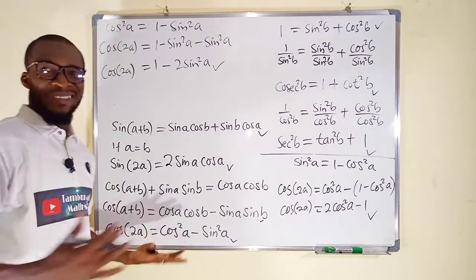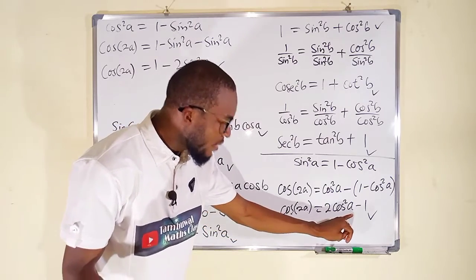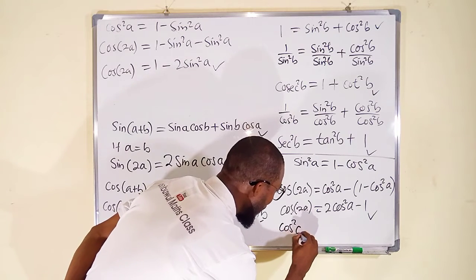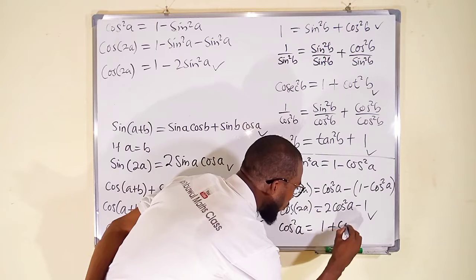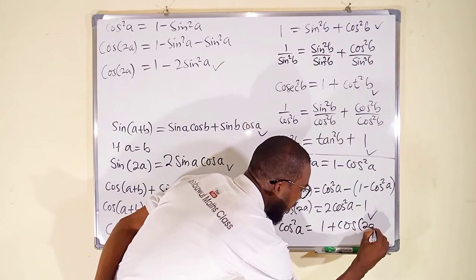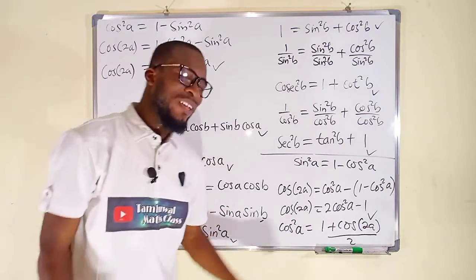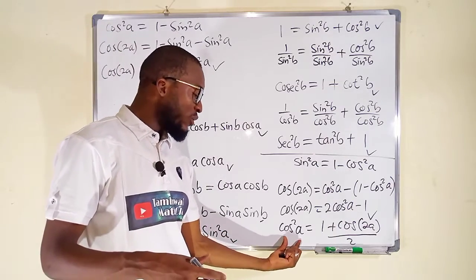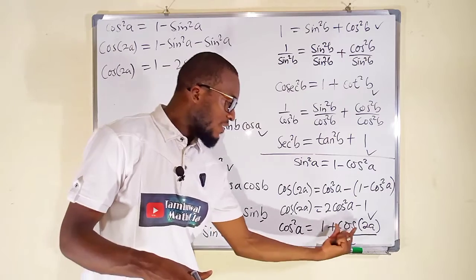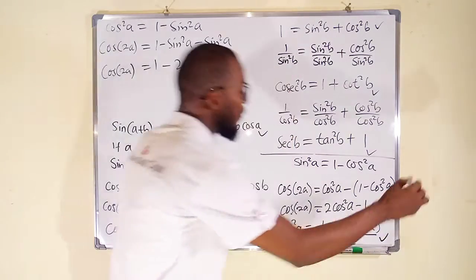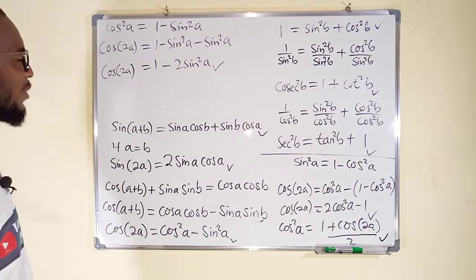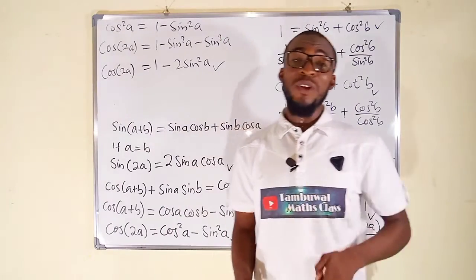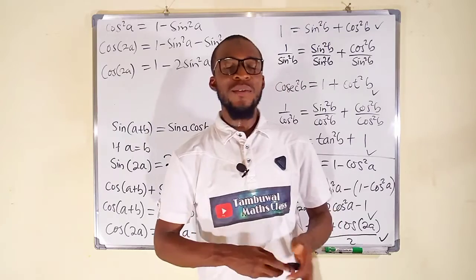From cos 2A = 2cos²A − 1, we can make cos²A the subject: cos²A = (1 + cos 2A) / 2. This is also very important, especially when performing integration that needs substitution — you can always substitute cos²A with this expression, as it is much easier to integrate. Thank you for watching. Do share with your learning colleagues and don't forget to subscribe to my YouTube channel for more videos.